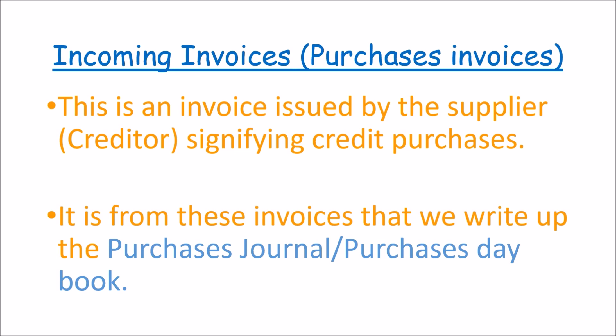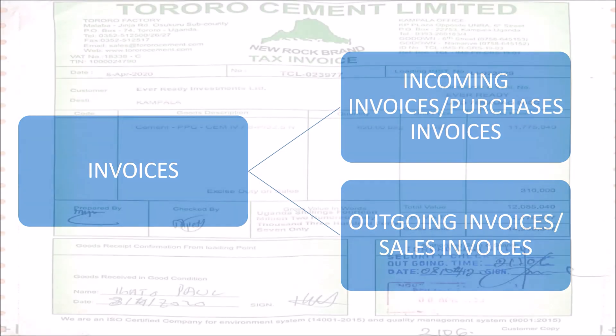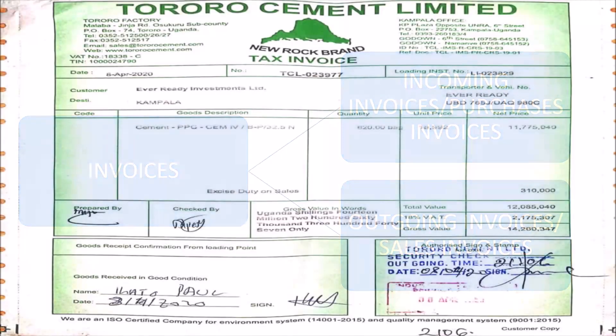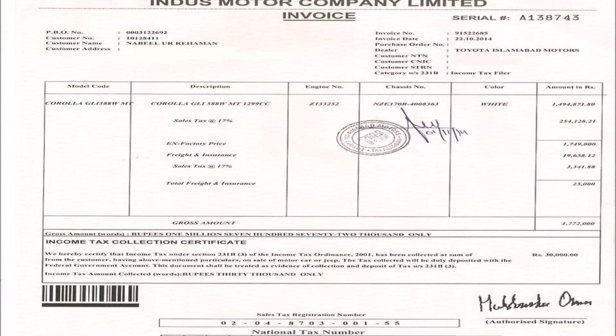In a nutshell, we have two types of invoices. We have the incoming invoices, which are also known as the purchaser's invoices or the inward invoices. Then we also have the outgoing invoices, which are also known as the sales invoices or the outward invoices. These invoices provide information for credit sales, credit purchases, credit customers, and credit suppliers.